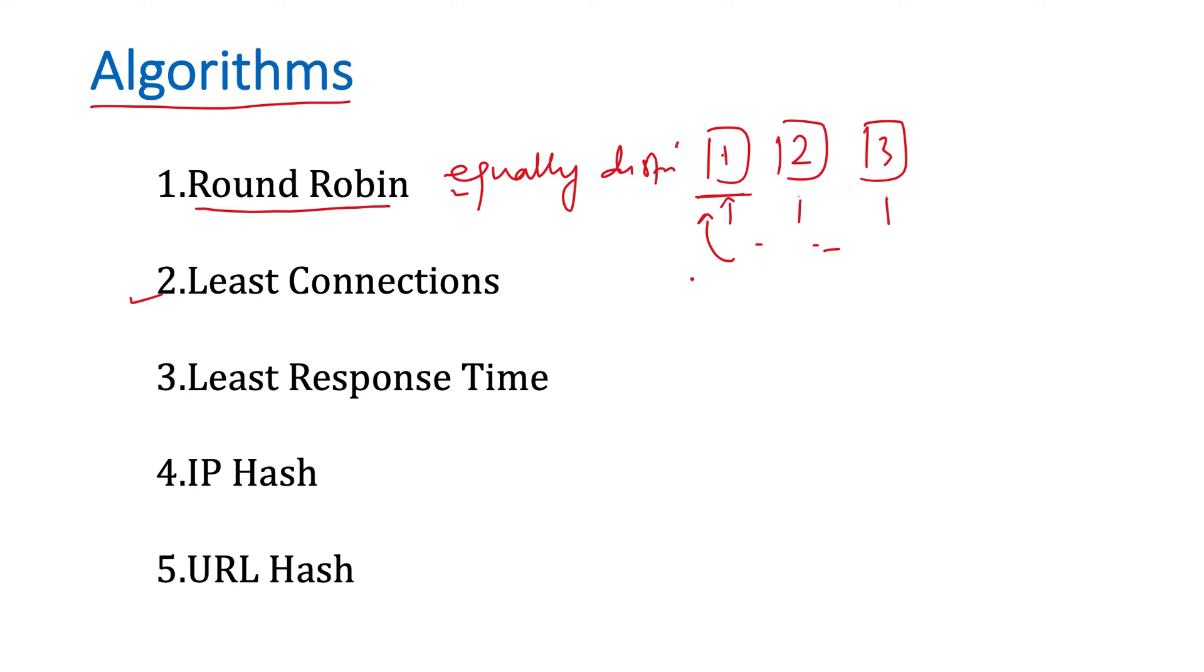The next algorithm is least connections. If this server is serving a thousand requests, this is serving 800 requests per second, and this is serving 850 requests, then we see that this server has the least number of connections. So the next request we will forward to the second server.